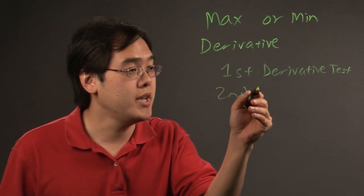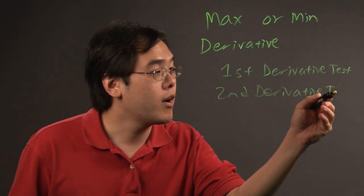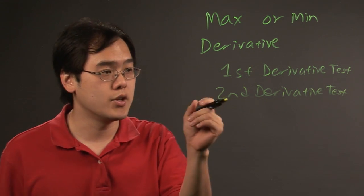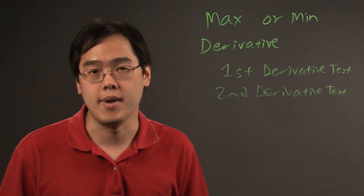Now, the other option would be the second derivative test, where you have to find the first derivative, find the critical values, and then plug those critical numbers back into the second derivative to find out which will give you your max and or your min.